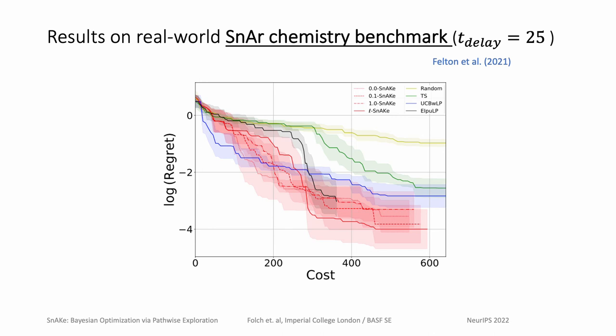Finally, we tested on the real-world SNAR chemistry benchmark using the SUMMIT package. The cost function was also real-world-inspired and modeled using a first-order dynamical system. SNAKE achieves regret similar to classical optimization methods at approximately 40% of the cost.